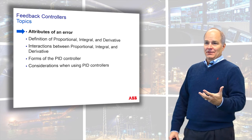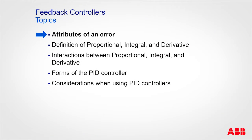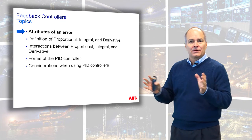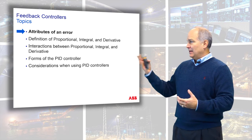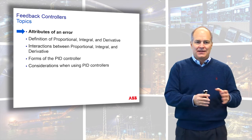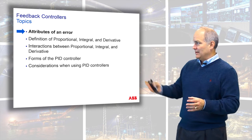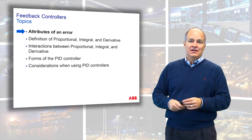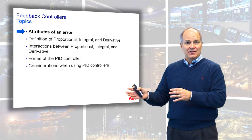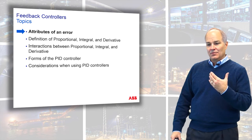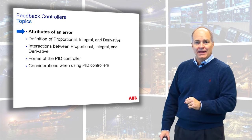This series — we're calling it feedback controller — is really broken up into the attributes of the error. We're going to start there: what is an error, then get into what is proportional, integral, and derivative. Those are mathematical terms, and I'm going to try to boil that down and show you how that works. Then we get into the interactions, because you very rarely use proportional by itself or integral by itself — they actually interact. Then we get into the forms of the PID algorithm, where different manufacturers have different forms. And I'll wrap up with some considerations when selecting or using a form, including different filters.